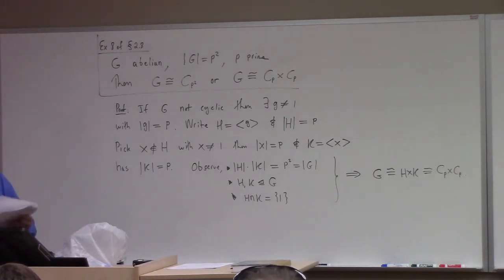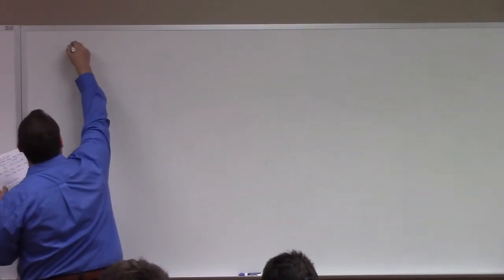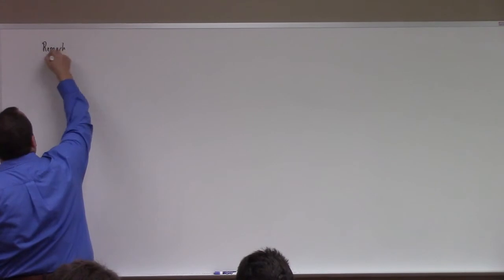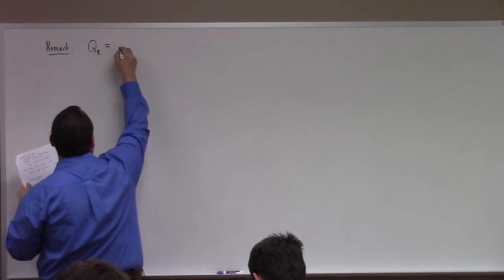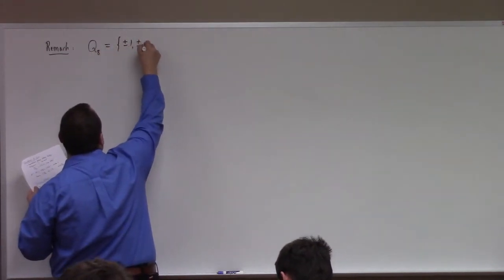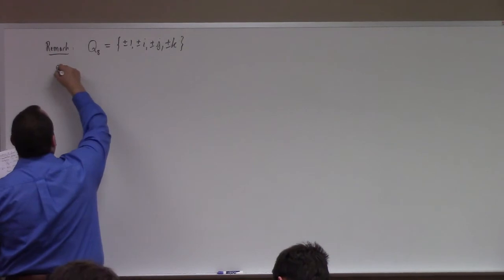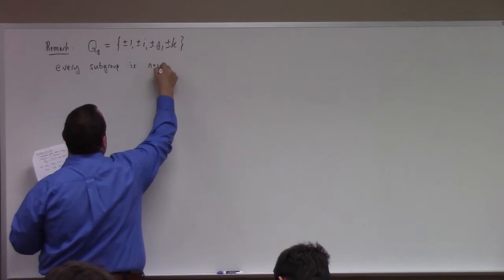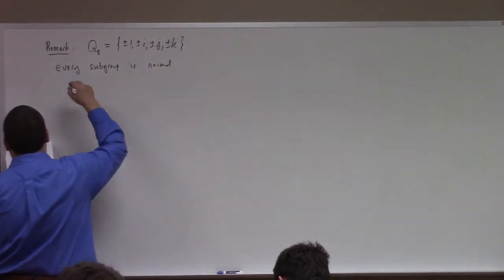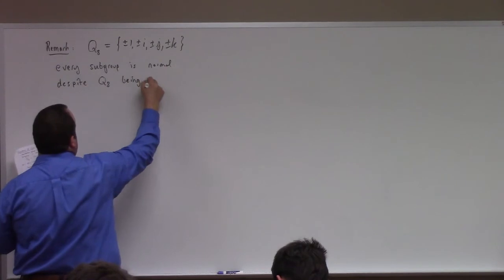He points out a cautionary remark — it's a nice one — which is Q8. You know what Q8 is. This is the quaternion 8 group: plus or minus 1, plus or minus i, plus or minus j, plus or minus k. Every subgroup is normal, despite Q8 being non-abelian.